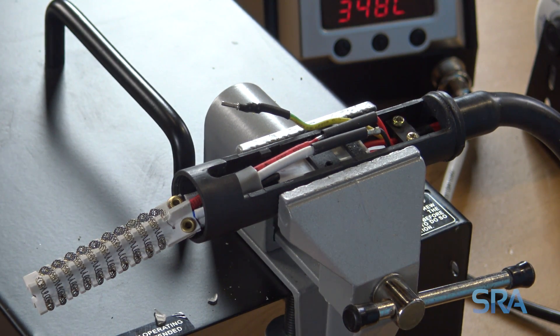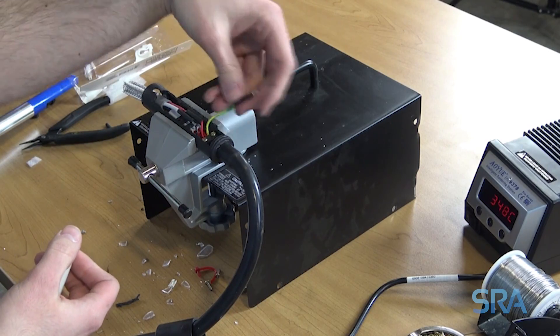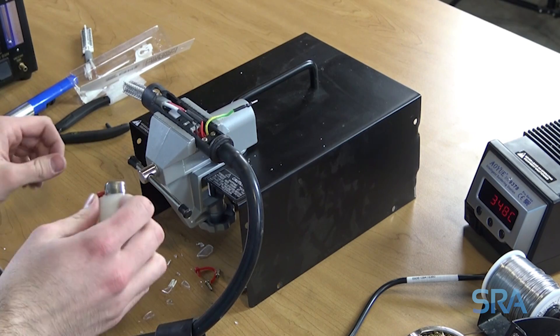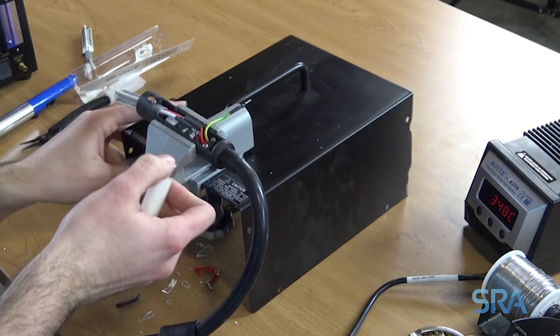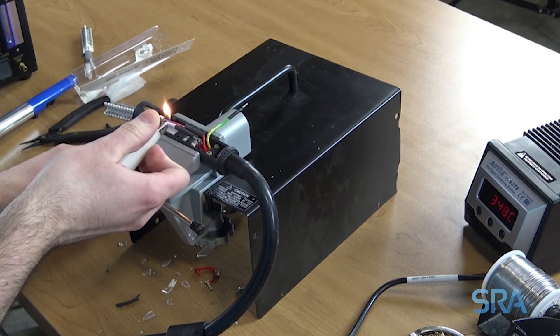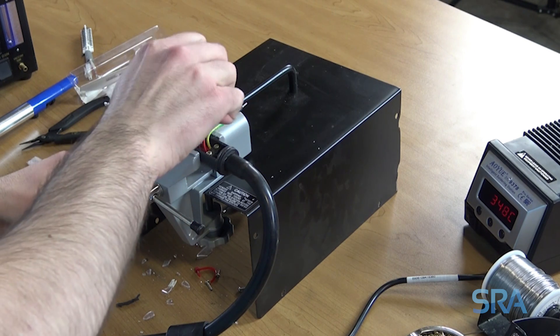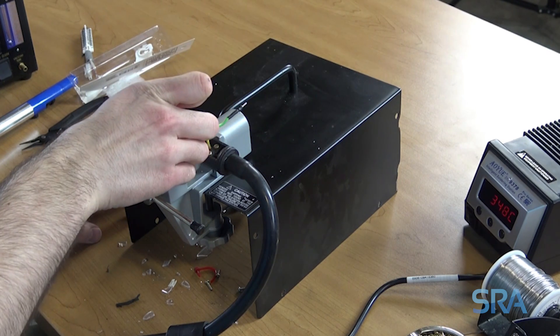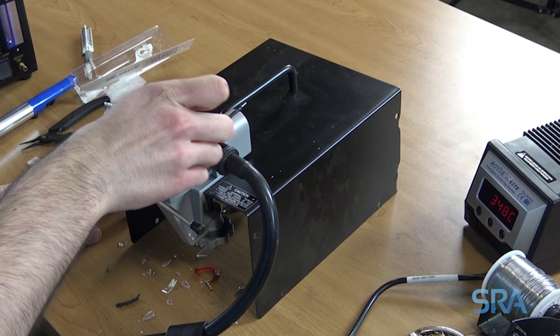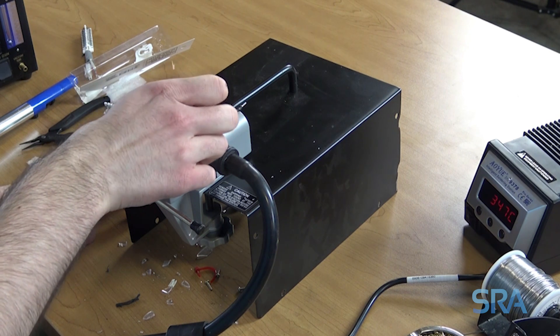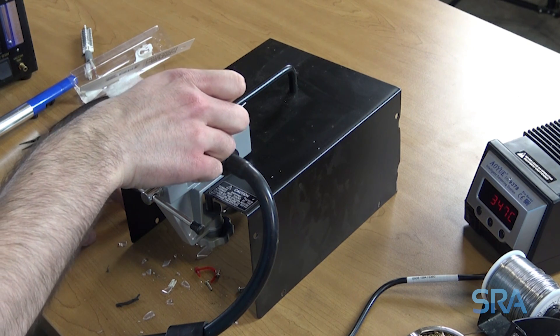You can use a heat gun if you have one, but if not, you can use a lighter. What I'm going to do is just get the bottom of the flame here quickly and shrink the wires down.